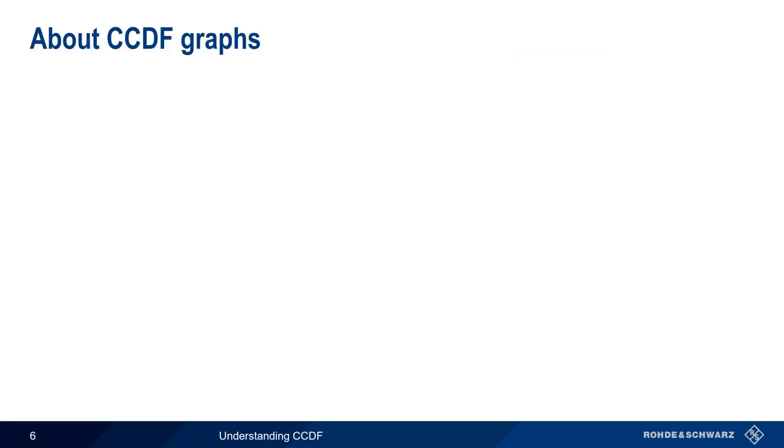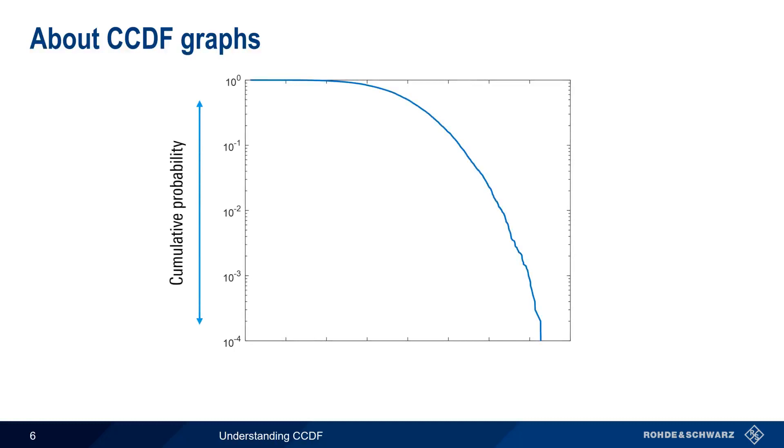Let's take a closer look at the CCDF graph. The y-axis is cumulative probability and is usually plotted on a log scale. The x-axis is power and can be plotted in two different ways. One way is to use absolute power values, say from minus 30 dBm to plus 20 dBm. The second way is to use relative power values, where the origin of the graph is defined as the average power or 0 dB and values on the x-axis are dB above average power.